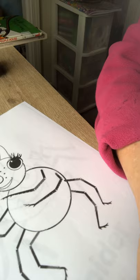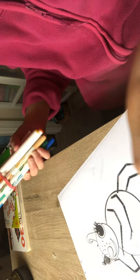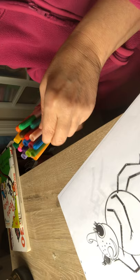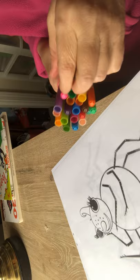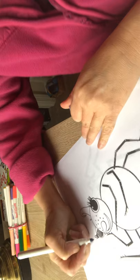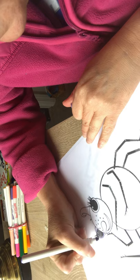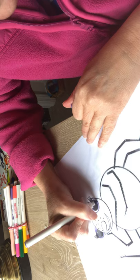Little Miss Spider went up the water spout. Down came the rain and washed the spider out. Out came the sun and dried up all the rain, and the itsy bitsy spider went up the water spout. Down came the rain and washed the spider out. Out came the sun and dried up all the rain, and the itsy bitsy spider went up the spout again.